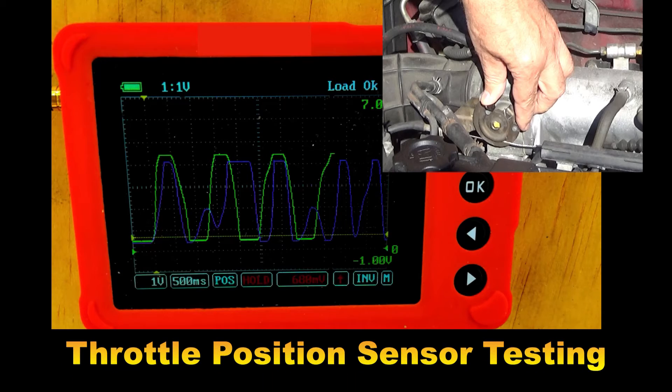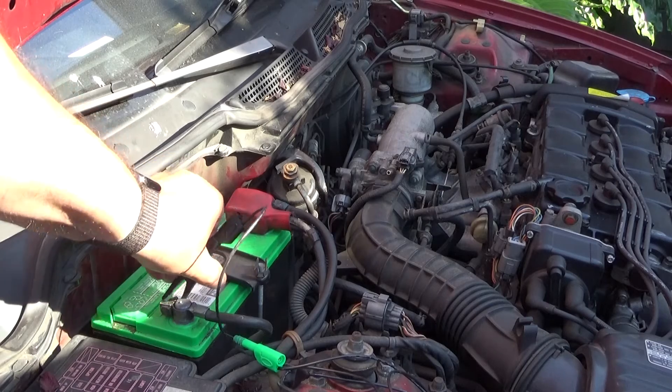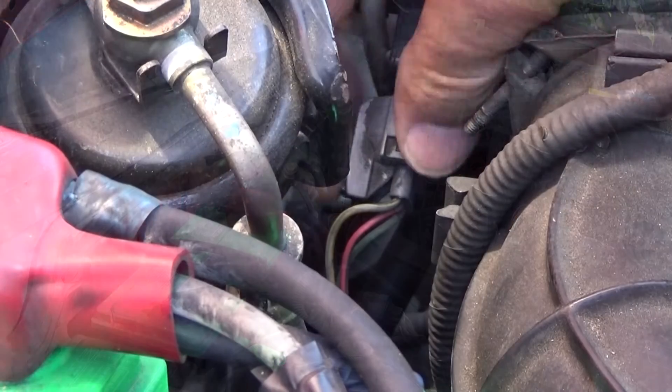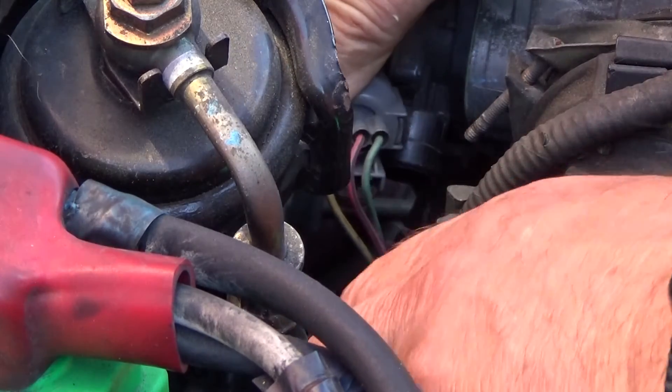Throttle Position Sensor Testing. Connect the ground lead to the negative cable. I will use the back probe pin to back probe the red and black wire for the throttle positioning sensor.